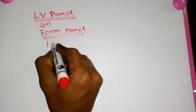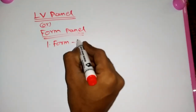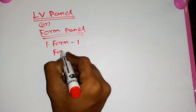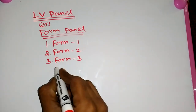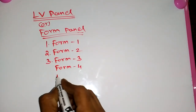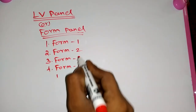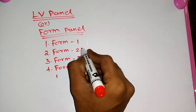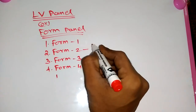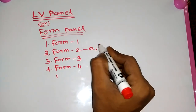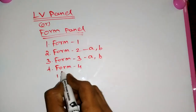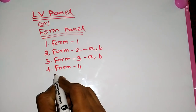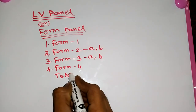Let's see the first one — Form 1. Then Form 2, Form 3, and Form 4. We have only four types. Form 1 does not have separate subtypes, but Form 2 has two separate types: Type A and Type B. Form 3 also has Type A and Type B. Form 4 panels have seven types.